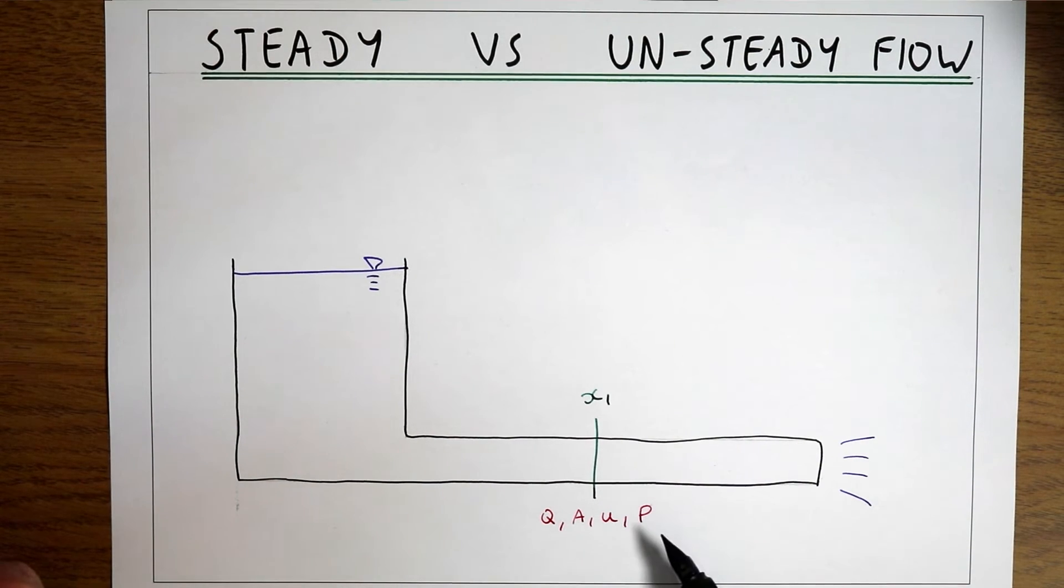If we measure these parameters, we start a stopwatch and after one second they're the same, after five seconds they're the same, after ten seconds they're the same, after a minute they're the same, then we know that the flow is steady because the flow parameters are not changing with time.